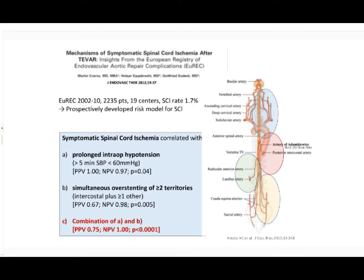As a risk model for SCI, European registry data were used from more than 2,000 TVAR patients from 19 excellent centers — excellent because the composite rate of spinal cord injury was a low 1.7%. This risk model shows that if the blood supply to the cord is cut off by stent graft coverage from two or more of these territories, the risk of symptomatic spinal cord injury increases dramatically. Such disaster happens even faster when hypotension is added. Avoiding both insults — a negative predictive value of 100% — promises very low SCI risk if only one supply territory is overstented and hypotension is avoided.